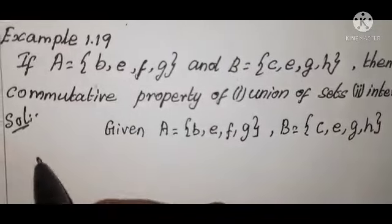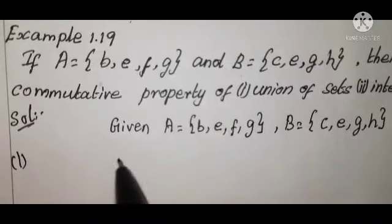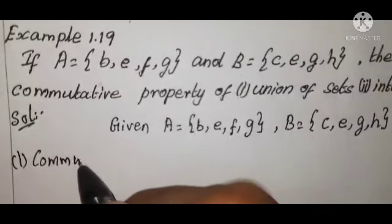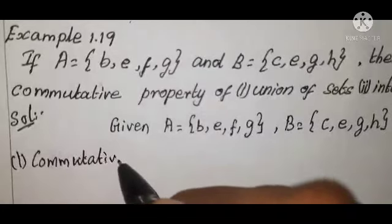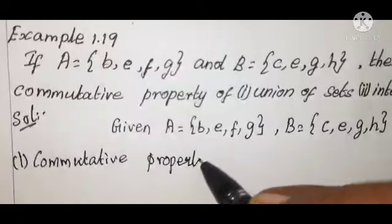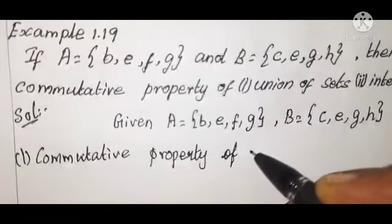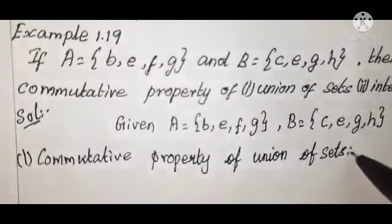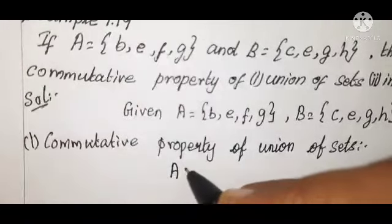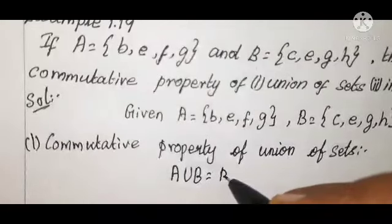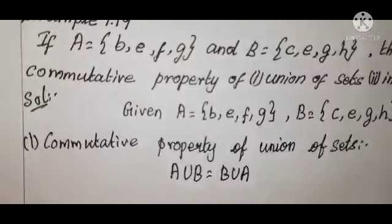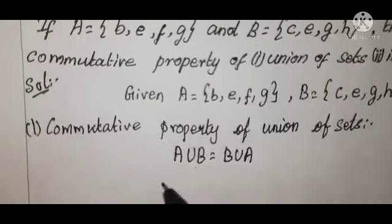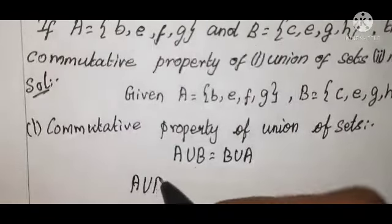First question: commutative property of union of sets. The formula is A union B equals B union A. First, write the left-hand side and find A union B.